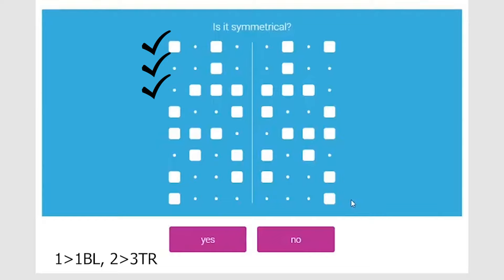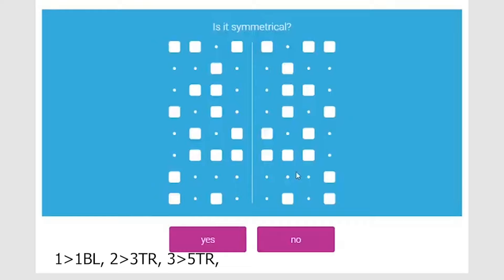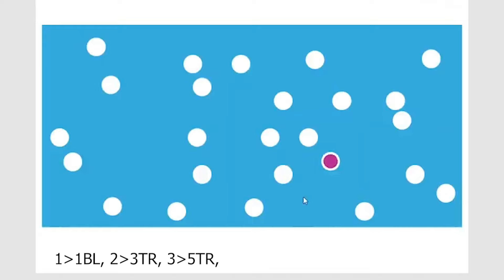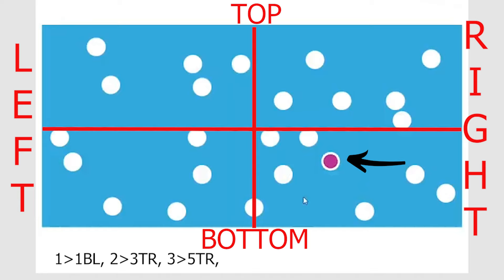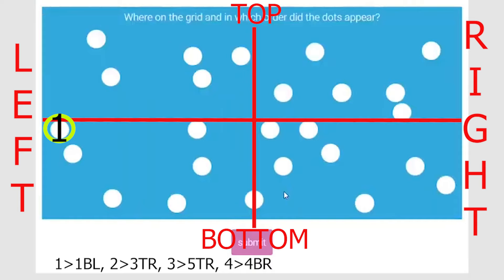Memory question again: the dot is at the fifth position in the top right. The symmetry question shows all six rows are symmetrical — yes. Memory question: dot at fourth position, bottom right. When I say one, two, three, four — I'm counting from the border: right border if top/bottom right, left border if top/bottom left. Another spatial question — first line is not symmetrical, so no. Now recalling: dot one is '1BL', dot two is '3TR', dot three is '5TR', dot four is '4BR'.